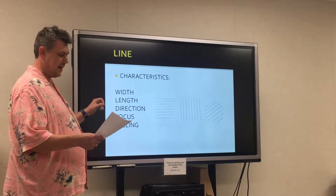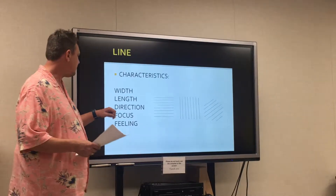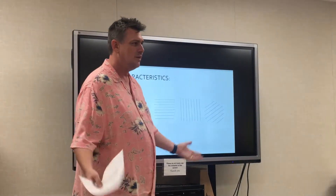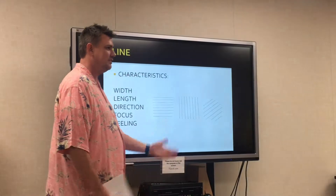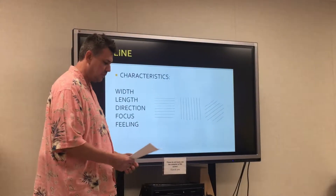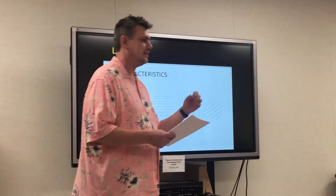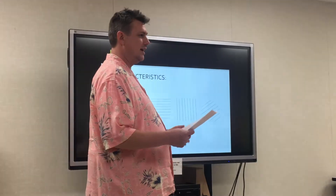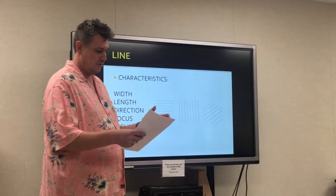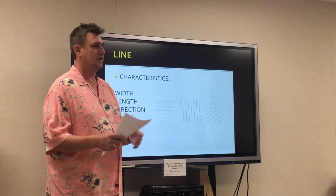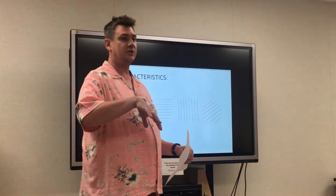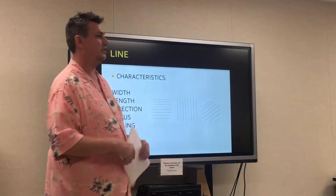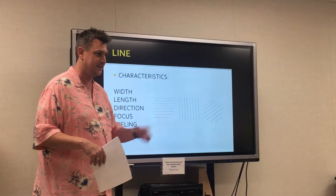Characteristics of lines: width, length, direction, focus, feeling. Width — is it thick? Is it thin? Does it taper? Is it uneven? Length — long, short, continuous, broken. All of these come into play when we start doing things like scenic drafting and we start dealing with line weights — how thick the line is. Is it a hidden line, so it's dashed? Is it a center line? All of that plays back into the ways we visually represent our designs.